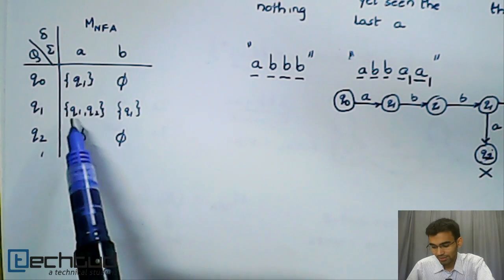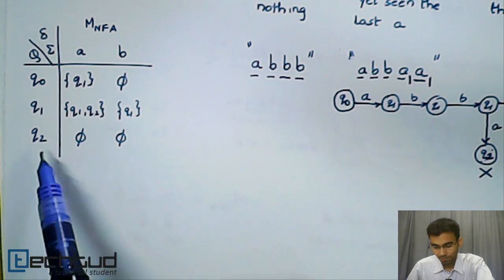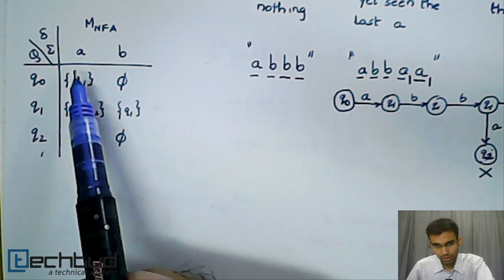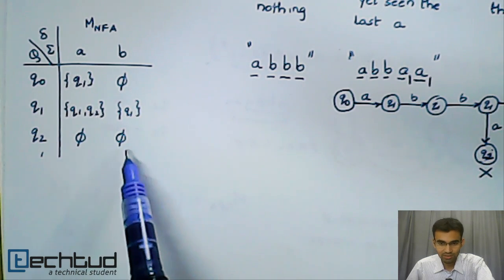From Q1 on an A, you can go to two possible next states Q1 and Q2, and on a B, you can go to the single next state Q1. From Q2 on an A or a B, there is no next state, hence the representation as the empty set phi.